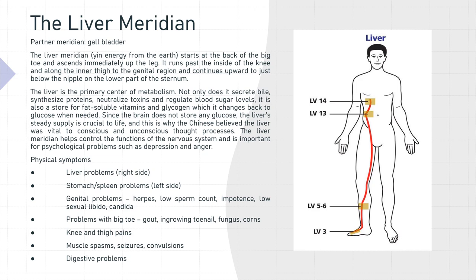The physical symptoms indicative of liver meridian imbalance are liver problems on the right side, stomach and spleen problems on the left side, genital problems, herpes, low sperm count, impotence, low sexual libido and candida, problems with the big toe, gout, ingrown toenails, fungus and corns, knee and thigh pains, muscle spasms, seizures, convulsions, and digestive problems.